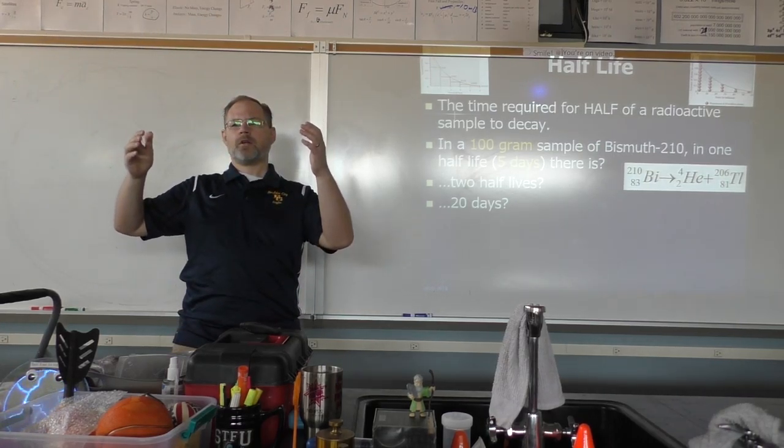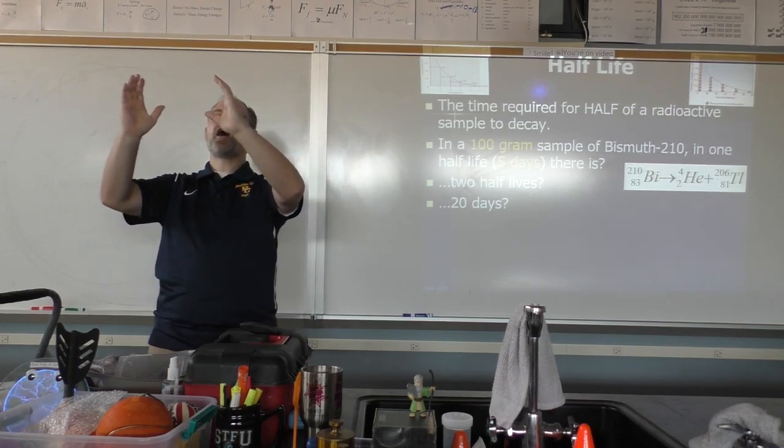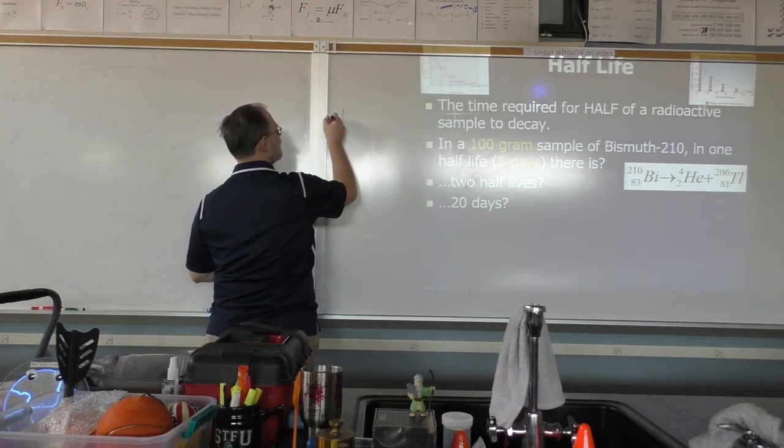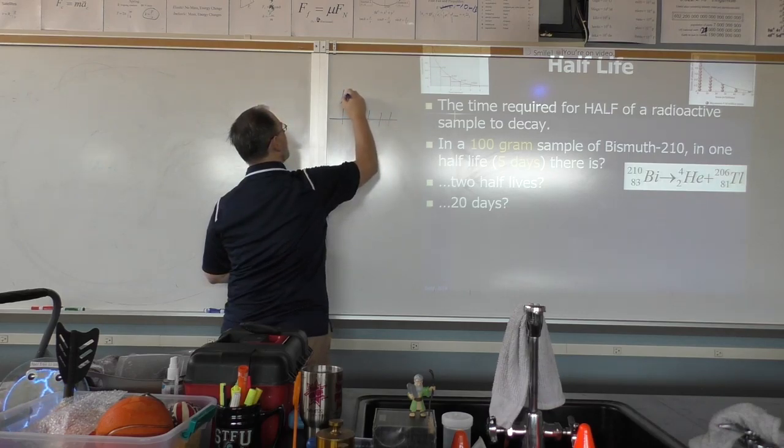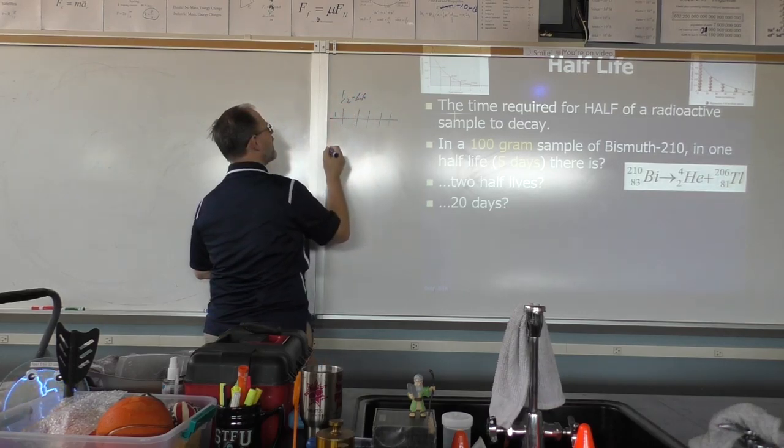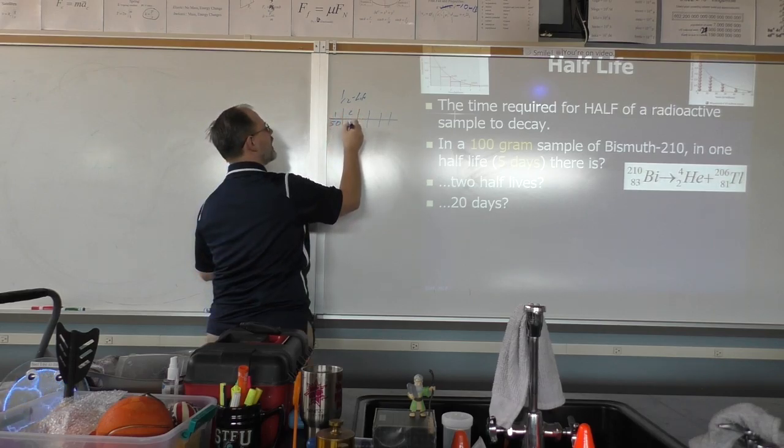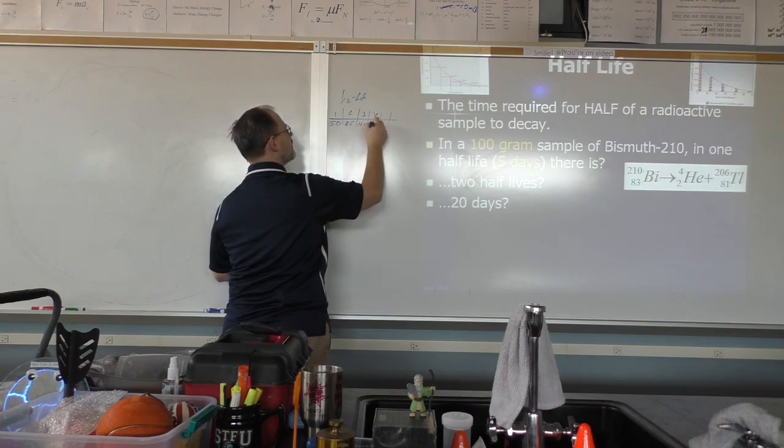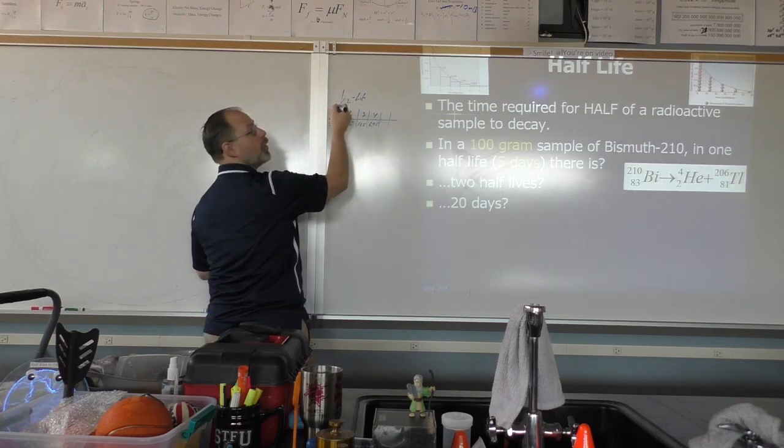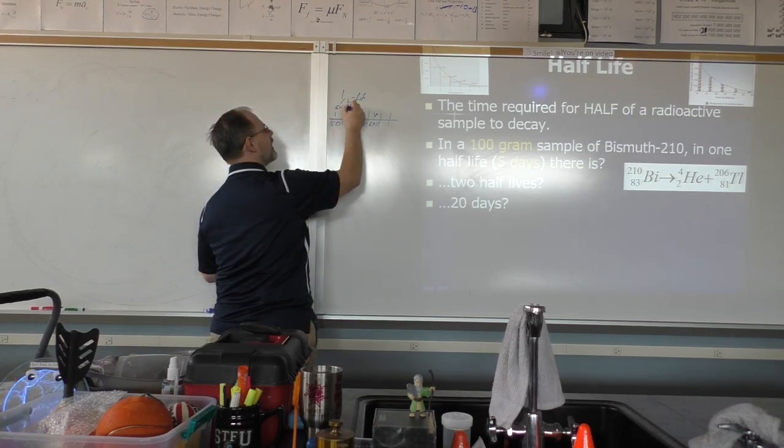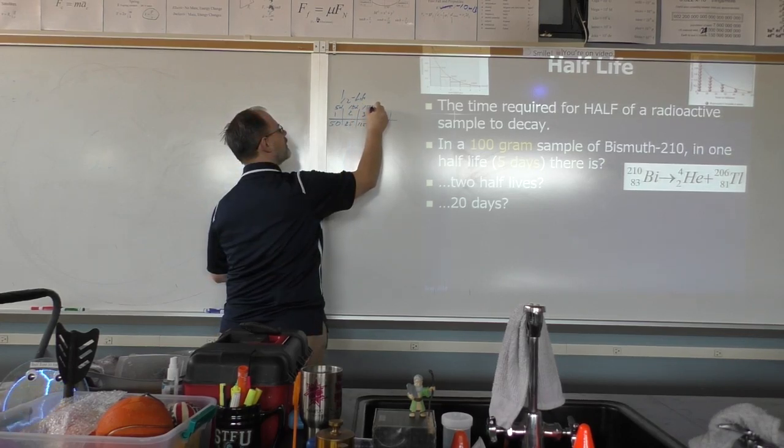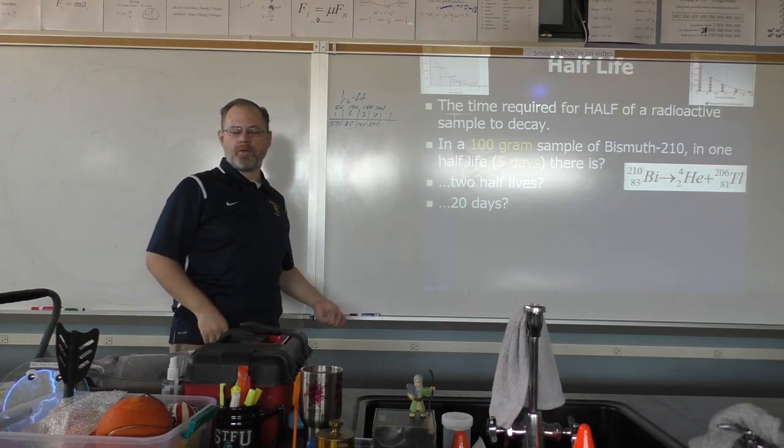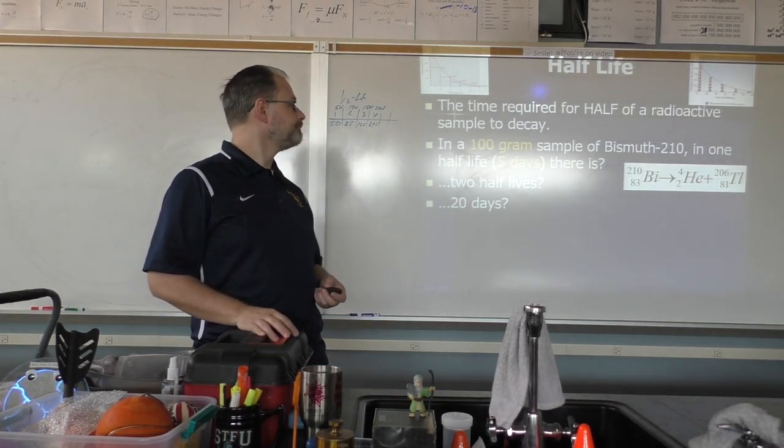So, 6.25. Okay, so we go from 0 half-lives, we've got 100. In fact, I find sometimes it's kind of fun to make a little table that looks like this. This is half-lives. So, after one half-life, you've got 50. After two half-lives, you've got 25. After three half-lives, you've got 12.5. After four half-lives, you've got 6.25. Okay, so one half-life is five days, two half-lives is 10 days, three half-lives is 15 days, and four half-lives is 20 days. So I find it just kind of fun to make a little table. Yeah, about 6.25.